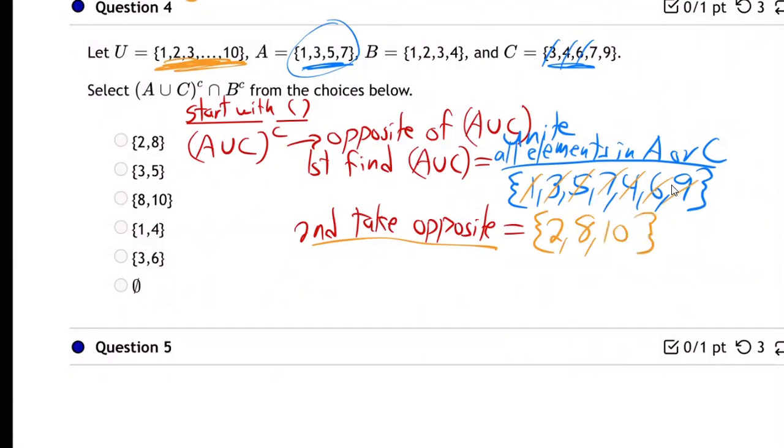So two, eight, and ten are the ones missing. Two, eight, and ten. So that's the opposite.